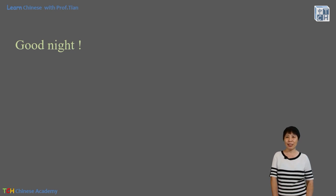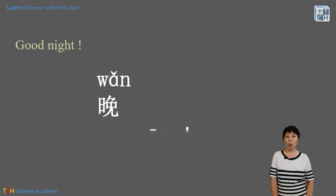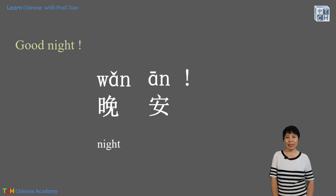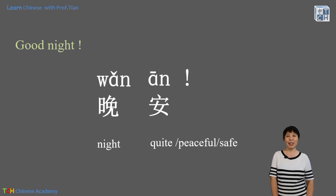How about goodnight? When parents say goodnight to their kids, we say 晚安. 晚 means 'night' and 安 means 'quiet,' 'peaceful,' or 'safe.' So by saying 晚安, we wish you a quiet, peaceful, safe night.